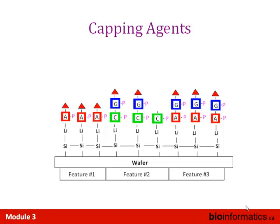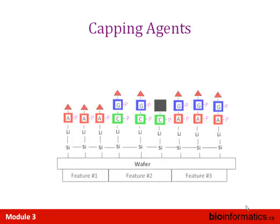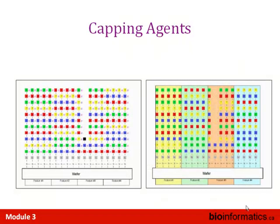It's easy for them to identify incomplete reactions: once the linker has been deprotected there's no linker on that molecule, and you can identify any molecule that does not have a reactive end. A capping agent can then be added to prevent that chain from being built any further. So some chains get built completely while others do not, and you sequentially build up the array base by base until you have complete chains.